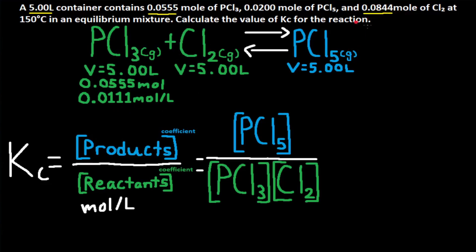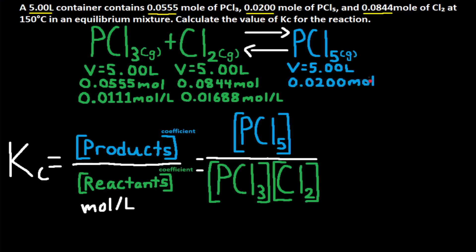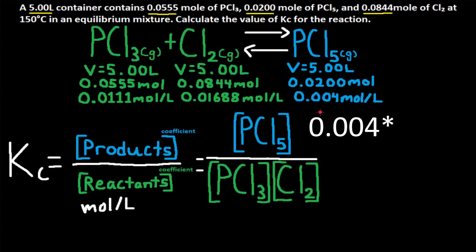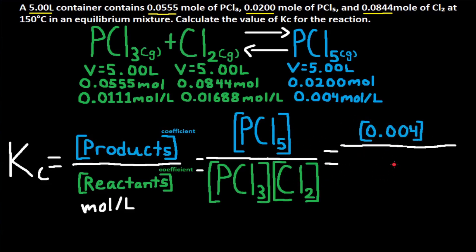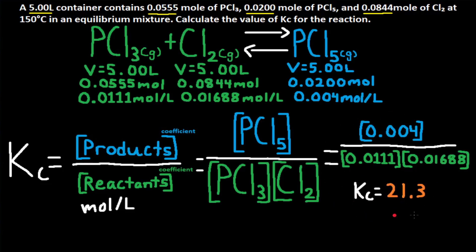Cl2 has 0.0844 moles; moles divided by liters gives us 0.01688 moles per liter. PCl5 has 0.0200 moles; moles divided by liters gives a concentration of 0.004 moles per liter. Now that we have the numbers, we can plug them into our formula. So Kc is equal to 0.004 divided by 0.0111 multiplied by 0.01688. Using your calculator, you should get a Kc value of 21.3 rounded, and this will be the answer.